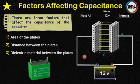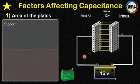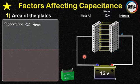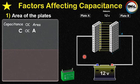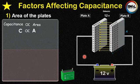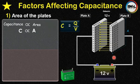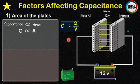Now let's see how the area affects the capacitance of a capacitor. The capacitance of the capacitor is directly proportional to the area of the plate — we can write C is directly proportional to A. There is a general formula for capacitance: C is equal to Q over V, where V is 12 volts and Q is the amount of charge stored on the plate.